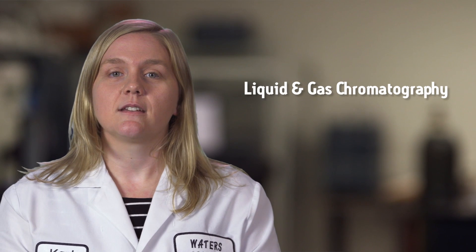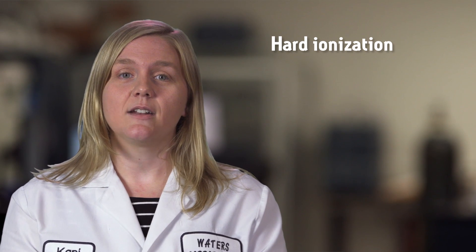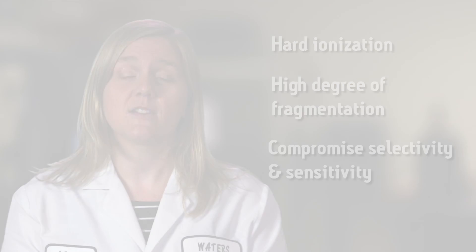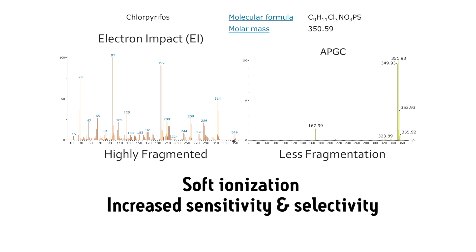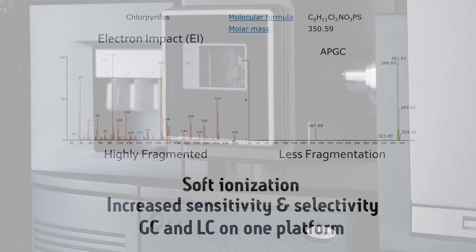The most common technologies used to meet this challenge are liquid and gas chromatography coupled to tandem quadrupole mass spectrometry. In GC-MS/MS, the traditional ionization mode used is electron impact. This is a hard ionization method that results in a high degree of analyte fragmentation, which can compromise the selectivity and sensitivity of the MS/MS measurement. APGC, by contrast, is a soft ionization technique that results in less fragmentation and subsequently increases the sensitivity and selectivity of MS/MS pesticide methods. Since the APGC source is readily interchangeable with the electrospray source, a single platform can be used for the analysis of both GC and LC-amenable pesticides.